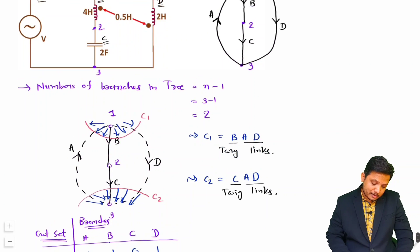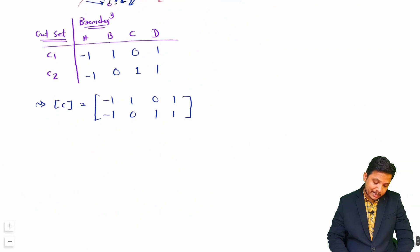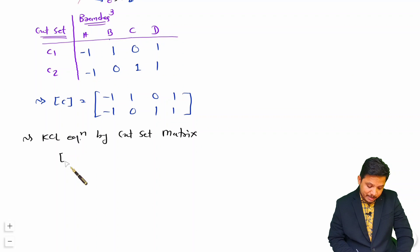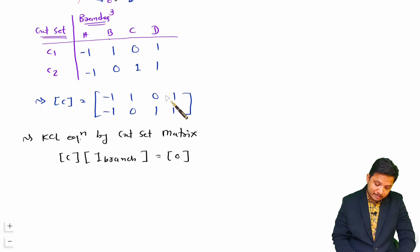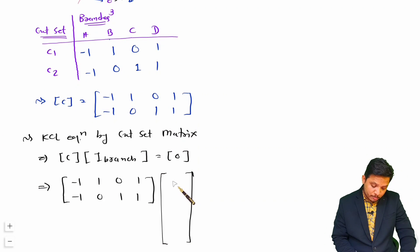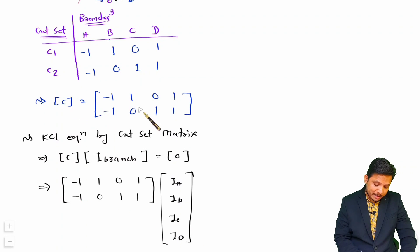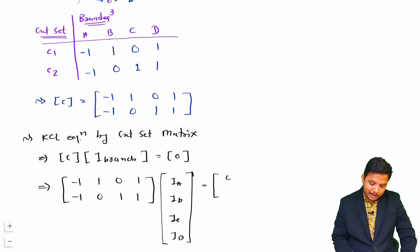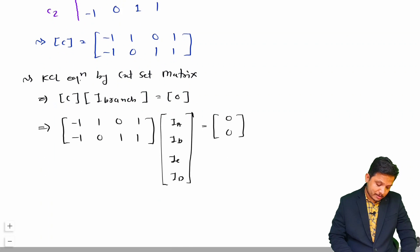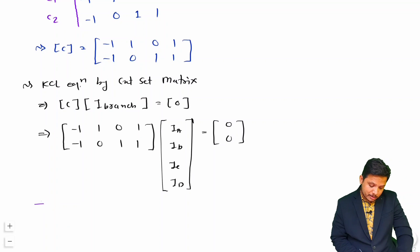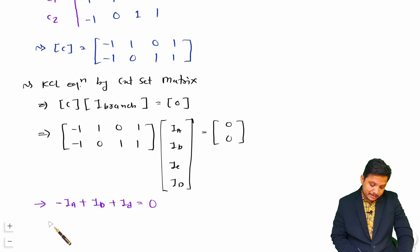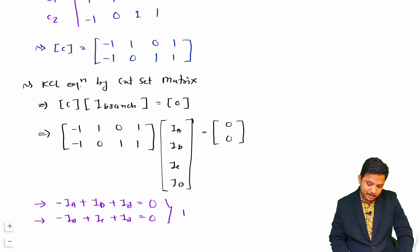Next, we write the KCL equations. The cut set matrix multiplied by the branch-wise current vector equals zero. The four branch currents are IA, IB, IC, and ID. This gives two equations: the first equation is minus IA plus IB plus ID equals 0, and the second equation is minus IA plus IC plus ID equals 0. These are the two KCL equations.